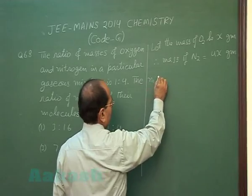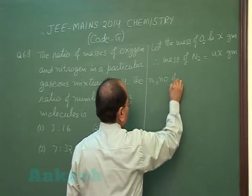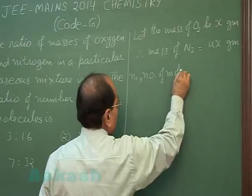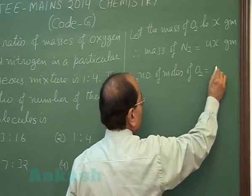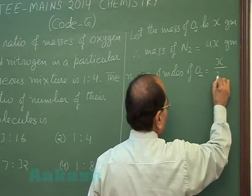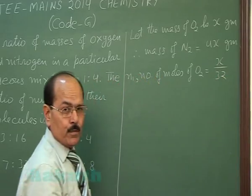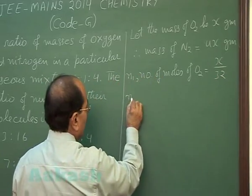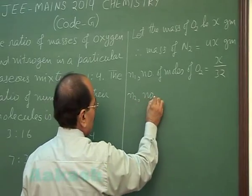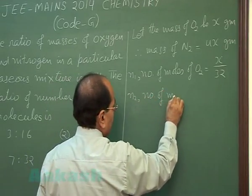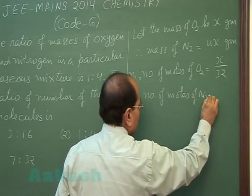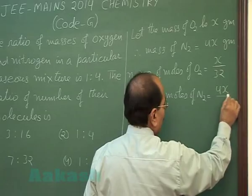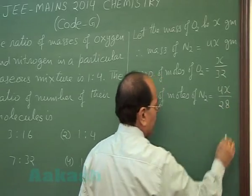N1, number of moles of O2 will be x by 32. N2, number of moles of N2 is equal to 4x by 28.